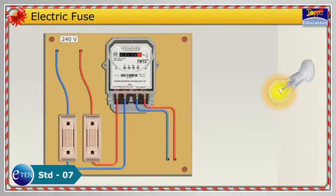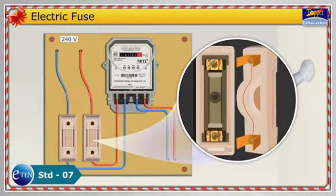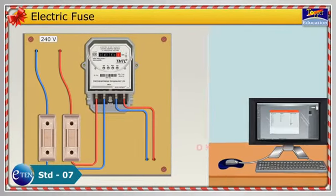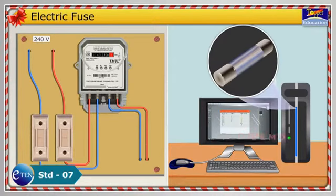An electric fuse consists of a thin wire made up of an alloy of tin and lead, usually placed inside a ceramic cartridge. They are used in buildings and small enclosed glass tube fuses are used in electric appliances.